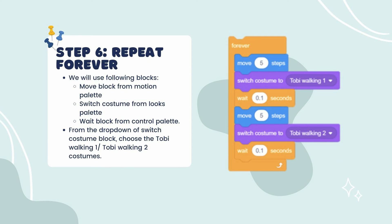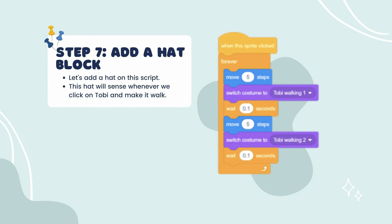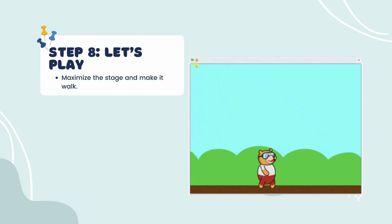From the dropdown of the Switch Costume block, choose either the 'Toby Walking 1' or 'Toby Walking 2' costume. Step 7: Add a hat block to the script — this hat will sense whenever we click on Toby and make him walk. Finally, maximize the stage and play the animation to make Toby walk.